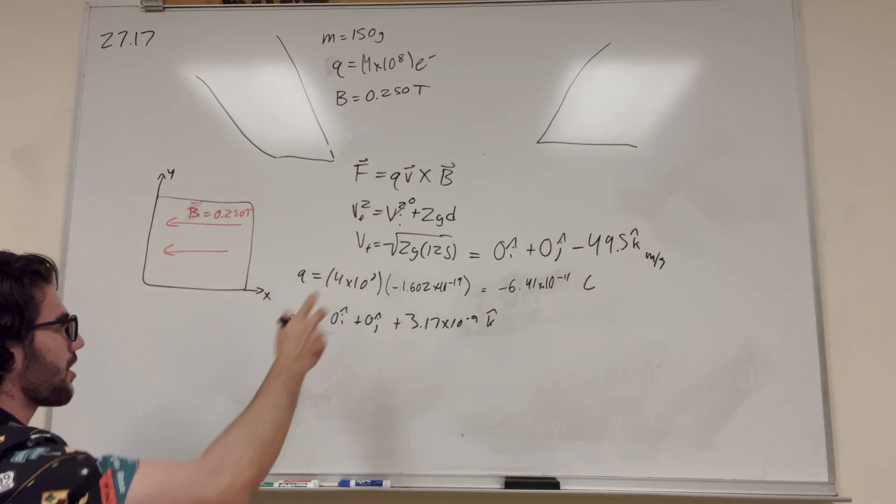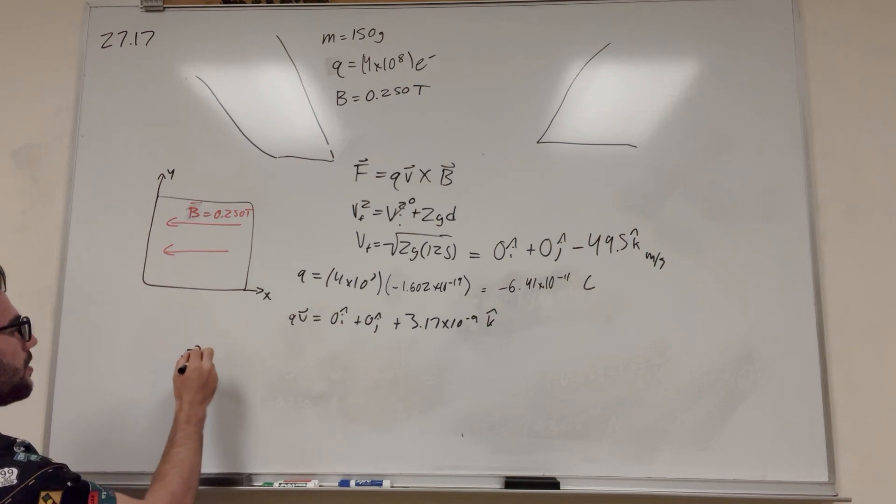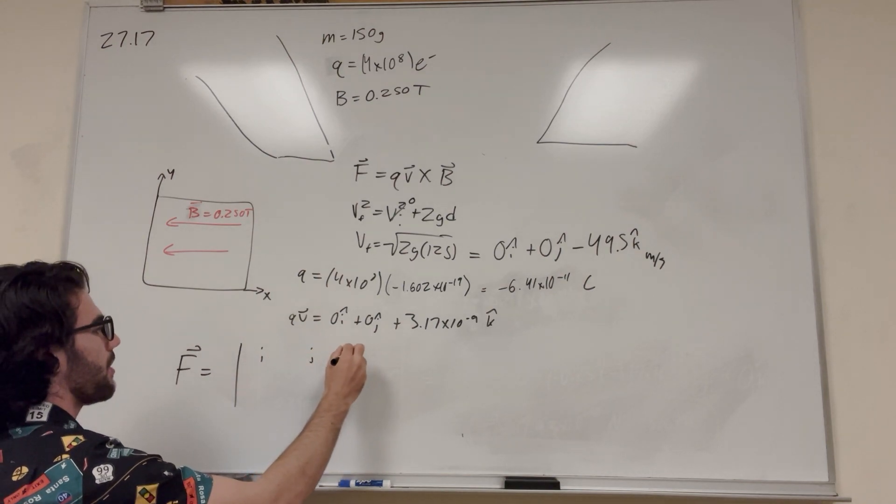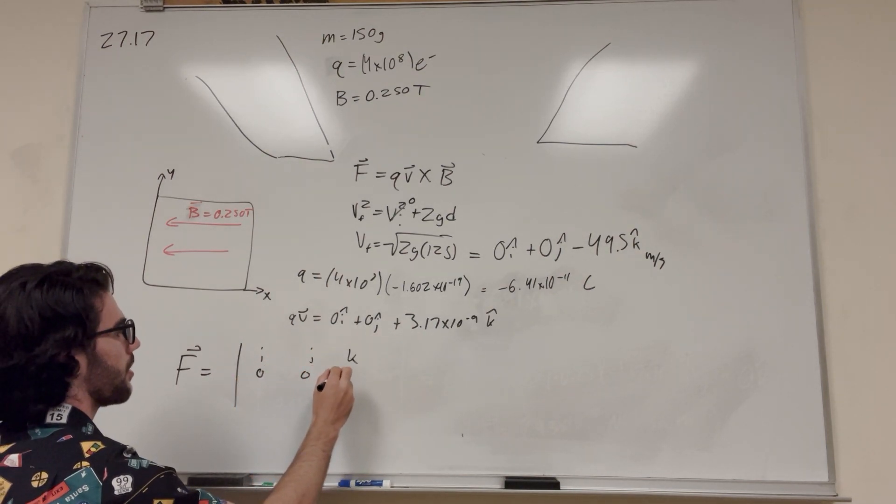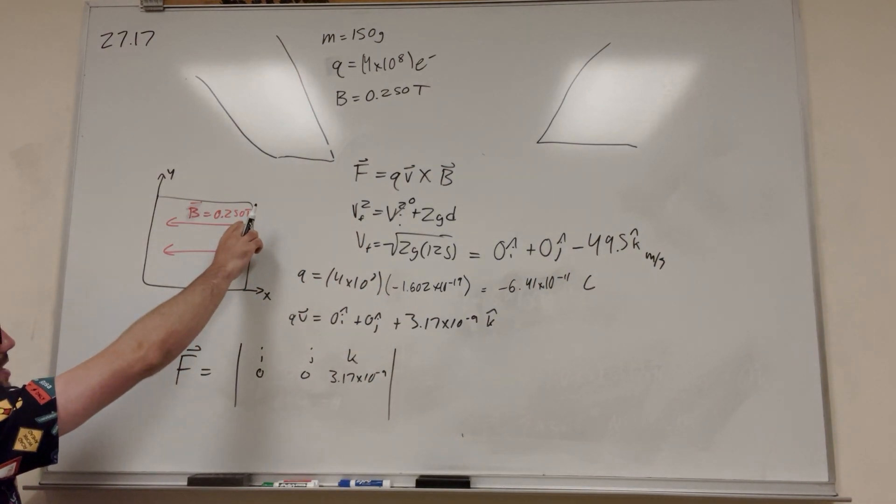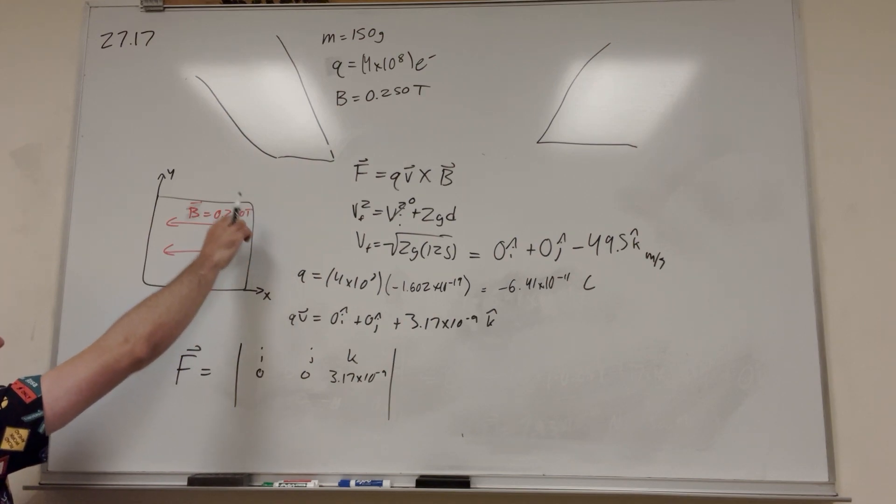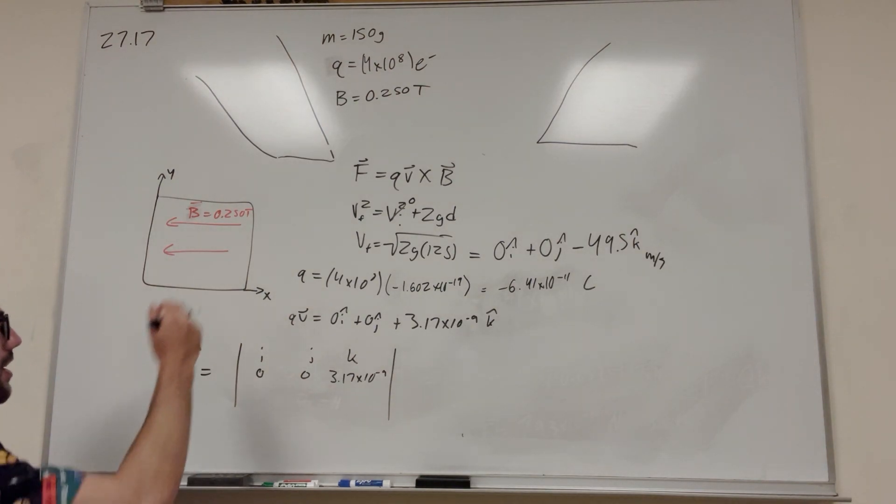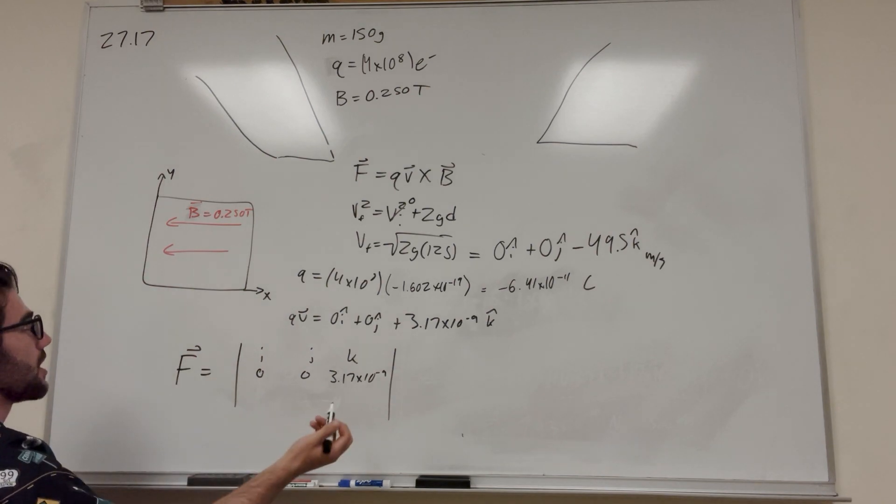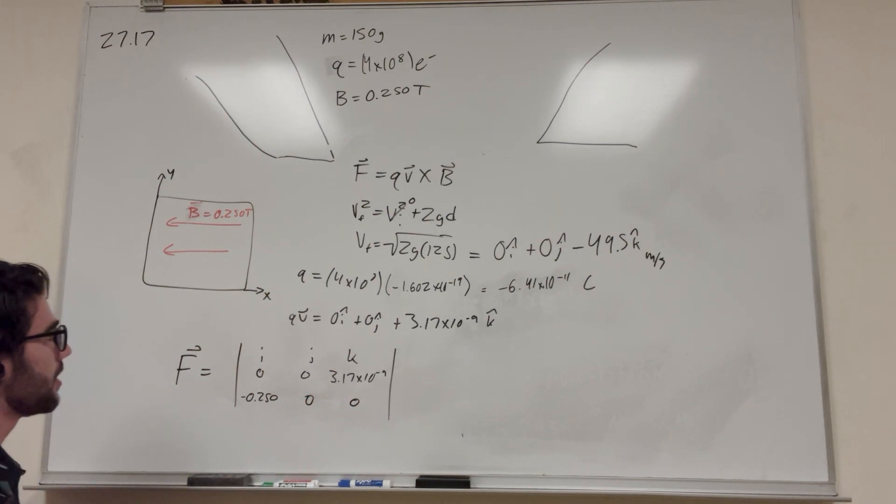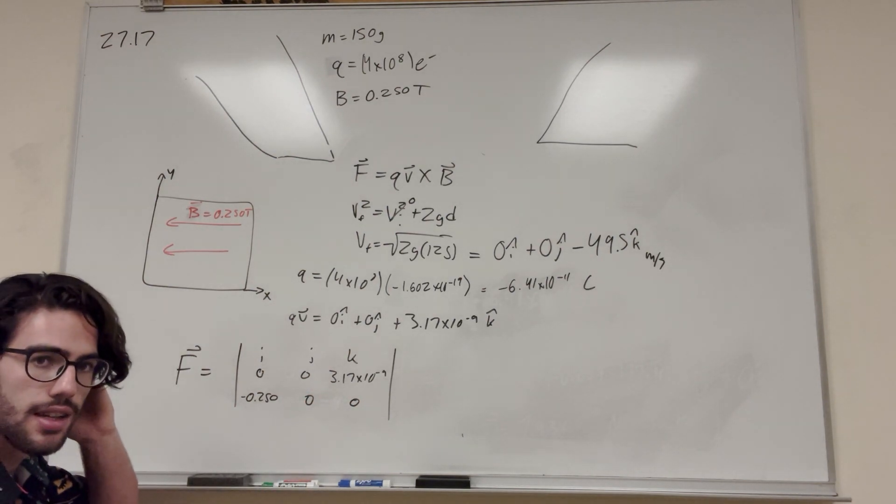So then all we have to do is take the cross product of this. So then F is equal to QV cross with B. So i, j, k, we said QV is 0, 0, 3.17 times 10 to the negative 9k. We know the magnitude of B is 0.25 Tesla, and we know that it's going east to west. So we label this X, and then this is Y, to say that it's going from positive X to negative X. So it's going to be just acting in the negative X direction. So we can say this is negative 0.250, and then 0 in the Y and 0 in the Z.